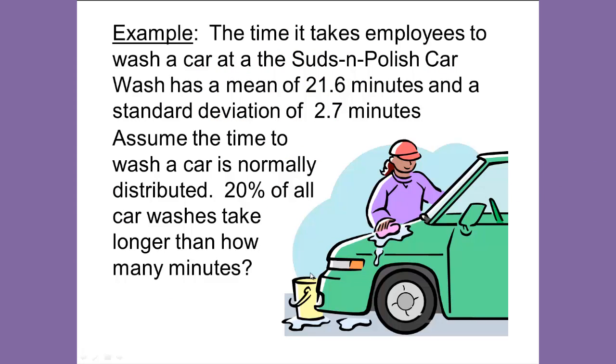Let's begin with our example. The time it takes employees to wash a car at the Suds and Polish Car Wash has a mean of 21.6 minutes and a standard deviation of 2.7 minutes. Assume the time to wash a car is normally distributed. 20% of all car washes take longer than how many minutes?